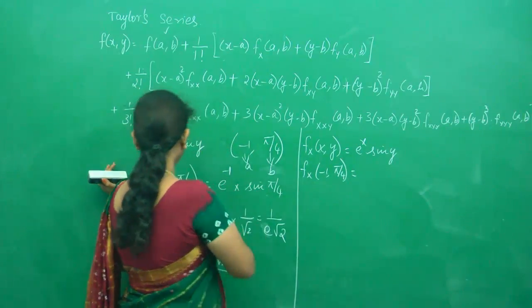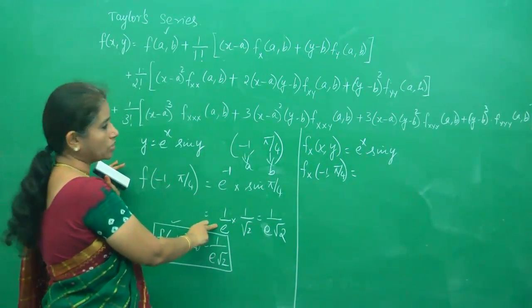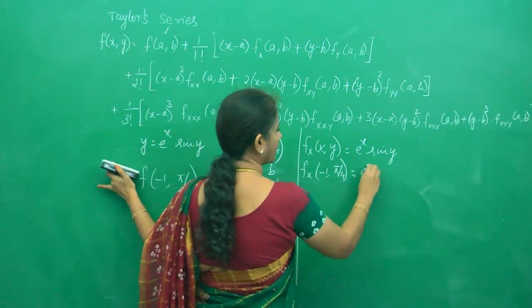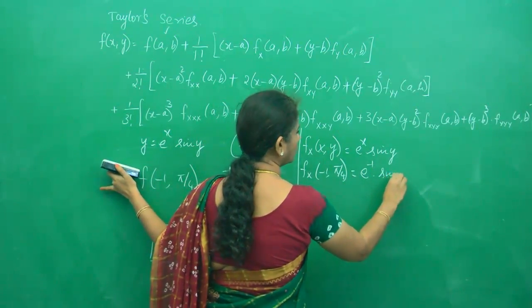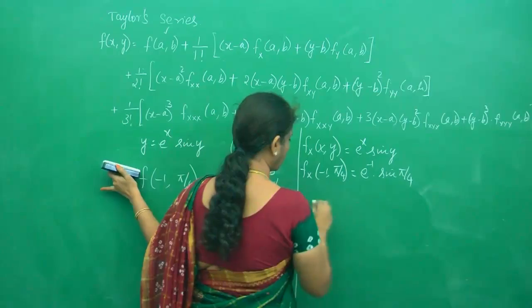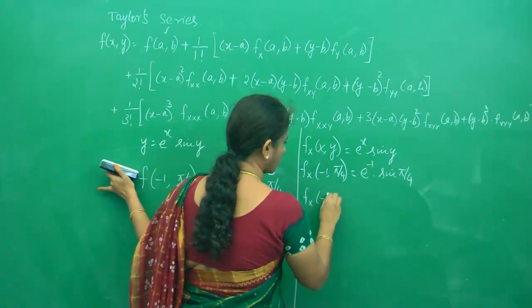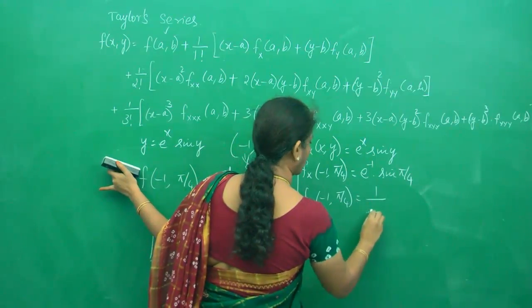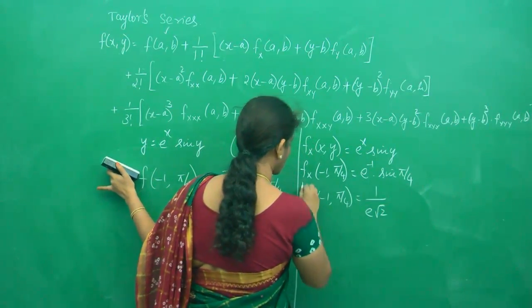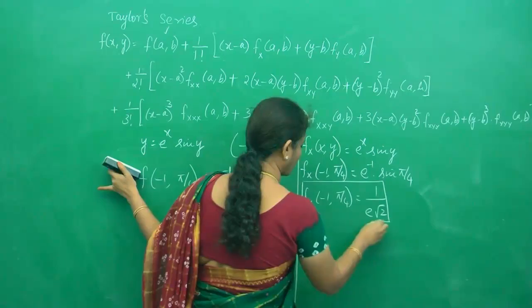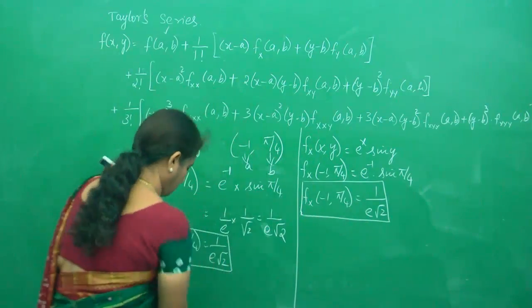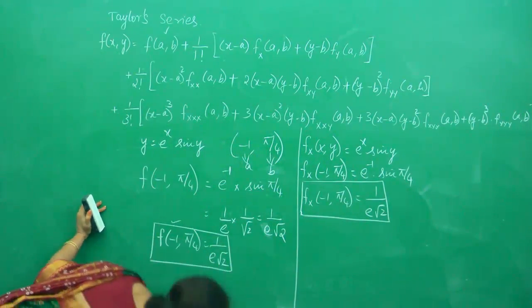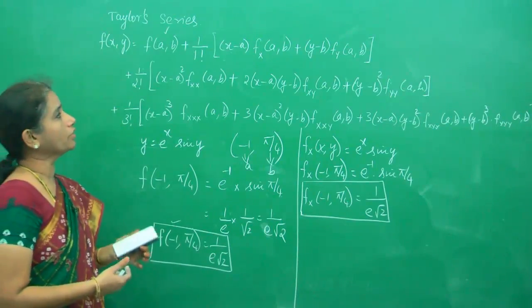When I substitute, it is the same as before: e^(-1) sin(π/4). So f_x(-1, π/4) is 1/(e√2). The second one is ready now.